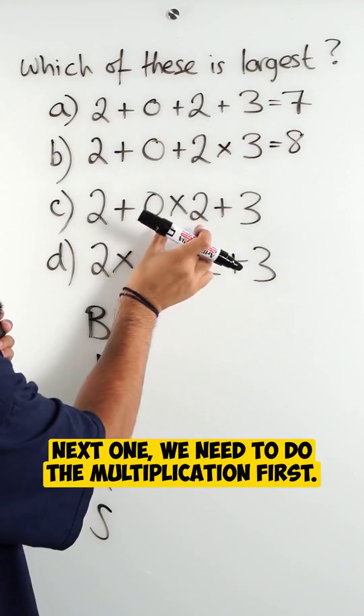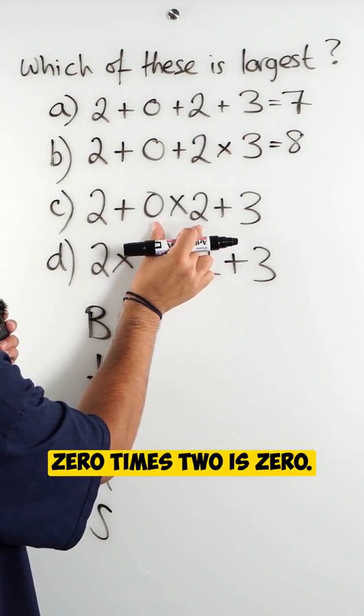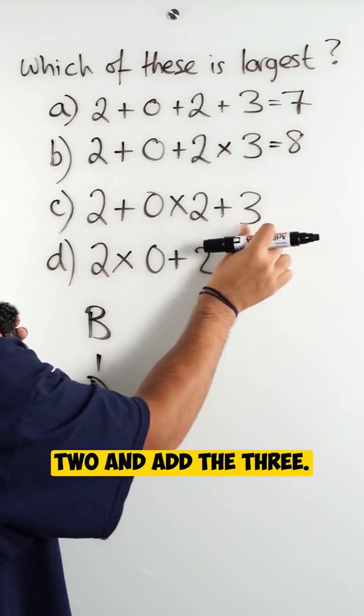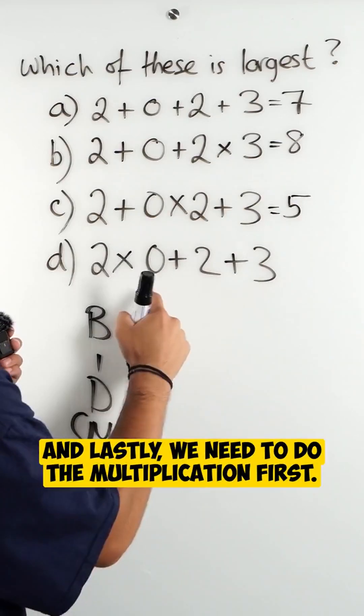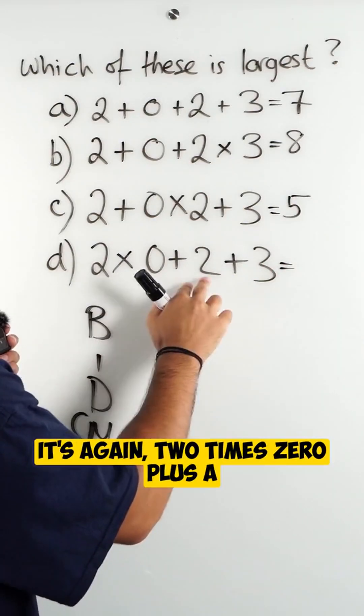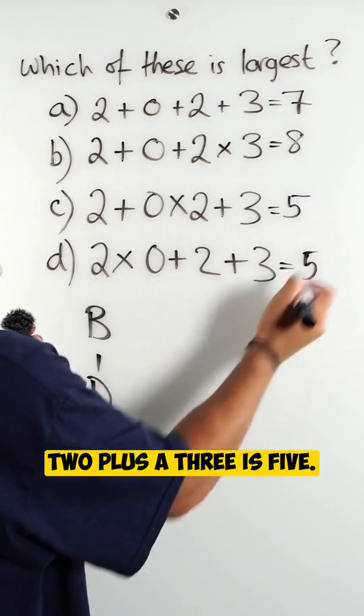Next one we need to do the multiplication first. 0 times 2 is 0. Then we're going to add the 2 and add the 3. We get 5. And lastly we need to do the multiplication first. 2 times 0 plus a 2 plus a 3 is 5.